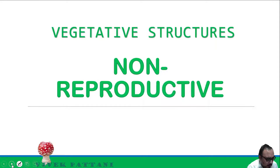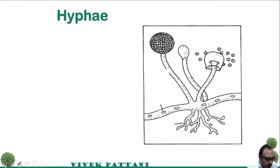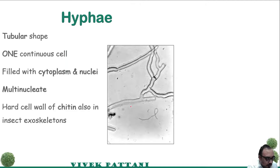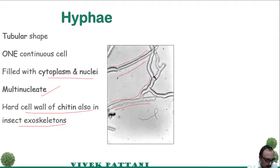Now moving forward with the non-reproductive vegetative structures of fungi. The first one is basically the hypha. Please have a look at the diagram — you can see the tubular shape of the hypha. It is one continuous cell filled with cytoplasm and nuclei; some are also multinucleate. The cell wall is also found in insect exoskeletons.